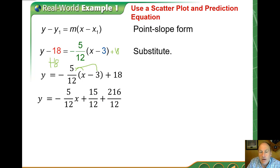To get a common denominator, 18 is the same thing as 216 over 12. A lot of 12s here. So we get y equals negative 5/12 x plus 231 over 12.